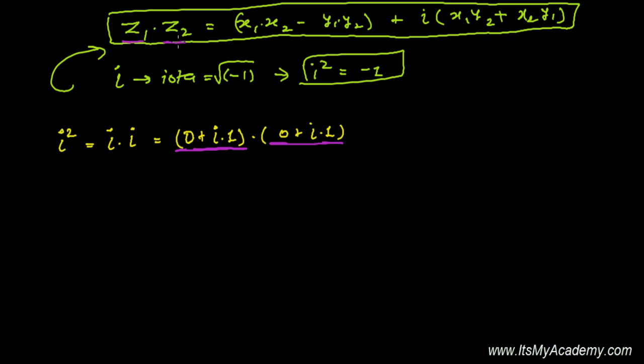When two complex numbers are multiplied, z1 times z2 equals x1 times x2 minus y1 times y2. That is 0 times 0 minus 1 times 1, which is minus 1, plus i times (x1 times y2 plus x2 times y1). That's 0 times 1 plus 0 times 1.